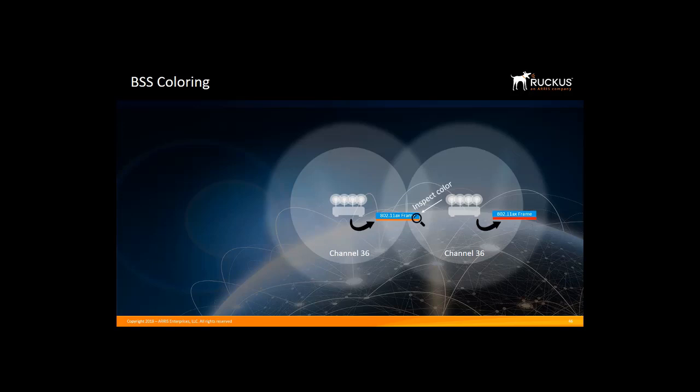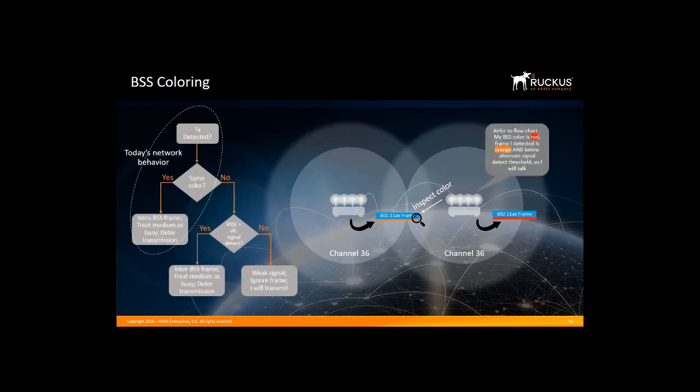Before you speak, you must tell your color — what classroom you're in — and before someone talks, they listen to see if anyone else is talking. If you are in the red classroom and another red client is talking, you stay quiet. If you hear someone but their color is orange, you know they are far away. Essentially, you stomp on that signal. In our example, the spatial reuse channel access rules are: is a transmission detected?